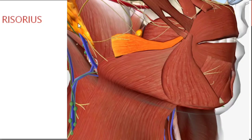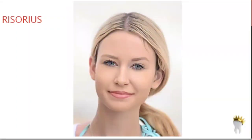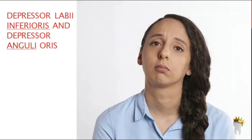Risorius, also called the smiling muscle, retracts the angle of the mouth laterally. It originates from the masseteric fascia — the subcutaneous tissue over the parotid gland — and inserts into the skin of the corner of the mouth, helping you smile. Now let's talk about the depressors of the lip.